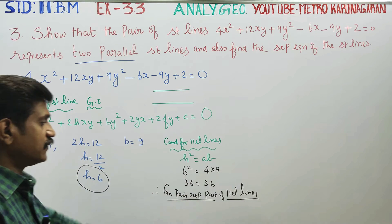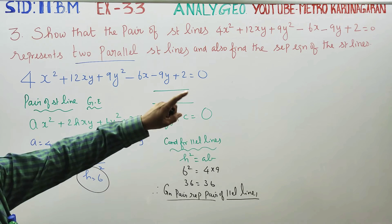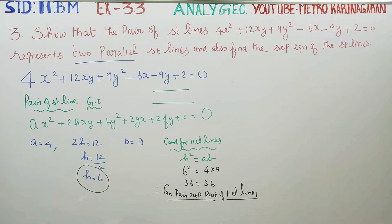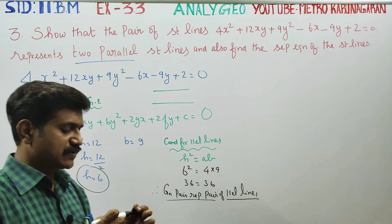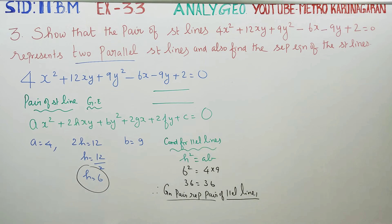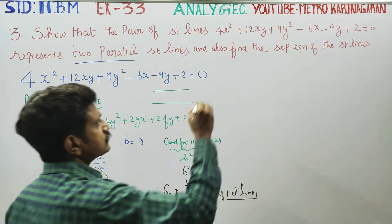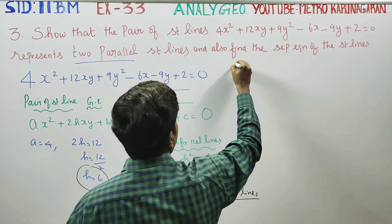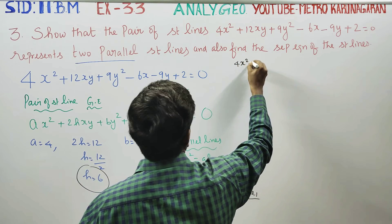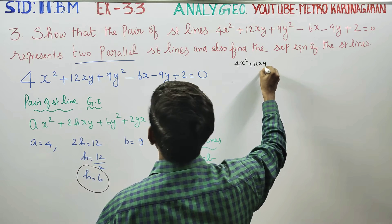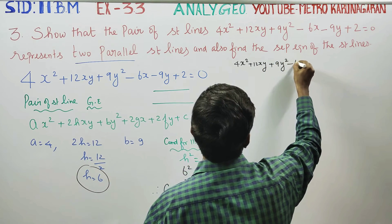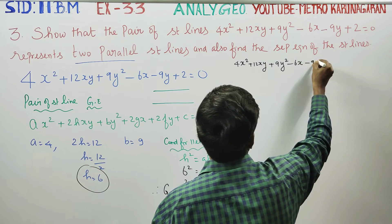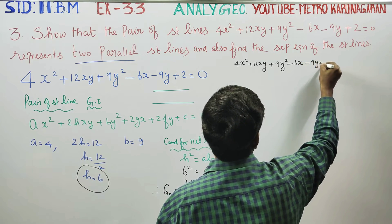The given pair represents two parallel lines. Now we find the separate equations of the two parallel lines. Consider the equation: 4x² + 12xy + 9y² - 6x - 9y + 2.